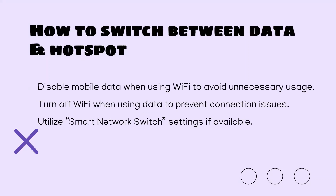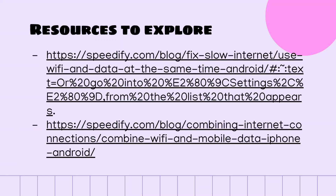If you want to switch between data and Wi-Fi, it's useful to make sure data doesn't stay on accidentally when you're connected to Wi-Fi, which could cause you to go over your cap. Most phones have a default feature that turns off data when connected to Wi-Fi, but some older phones don't and may require manual setup. Most phones also have quick settings — accessible by swiping from the top or bottom of the screen — where you can easily switch data off.